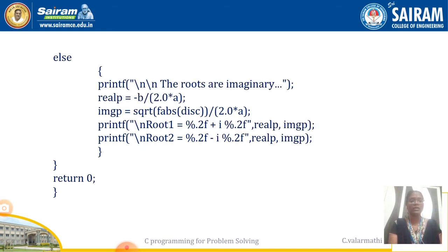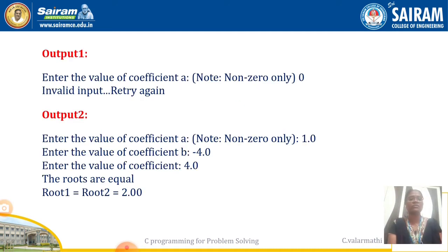If disc is less than 0, the roots are imaginary. On that condition, we need to find the real part and the imaginary part. The real part is -b / (2a), and for the imaginary part we need to apply the fabs() function on the disc value. In that way, the imaginary roots are computed.